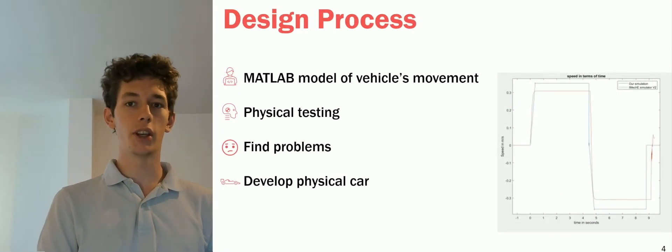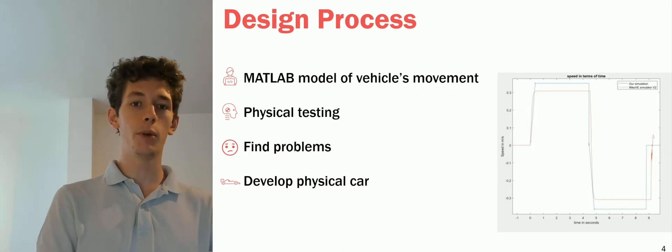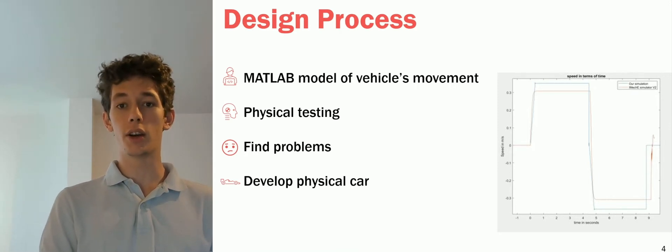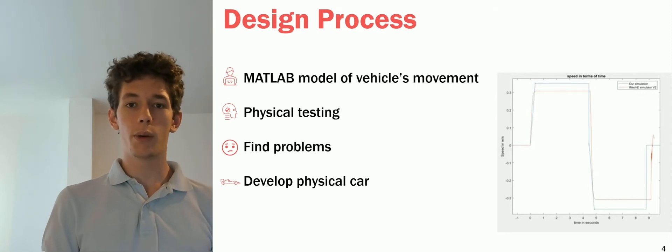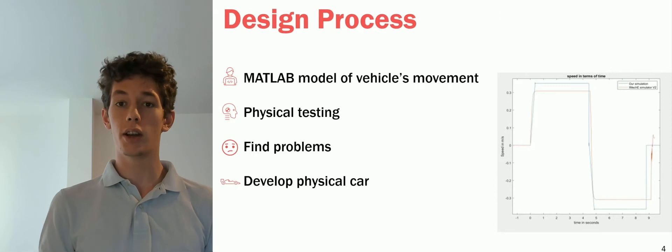An initial step was the creation of a vehicle dynamics model in MATLAB. This allowed us to find the optimal vehicle mass, motor and gear ratio. We were also able to check that our car would finish within the two minute time limit. Using a simulation model accelerated our development process, as it helped us avoid lengthy physical proof-of-concept testing and allowed us to focus on refining our design.